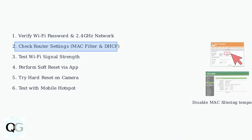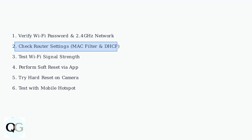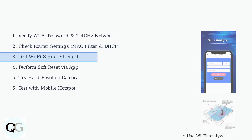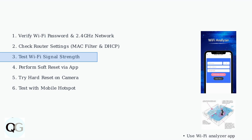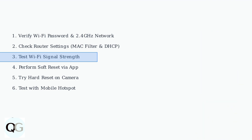Next, check your router settings. Temporarily disable MAC address filtering and ensure DHCP is enabled, as these settings can prevent new devices from connecting to your network. Test the Wi-Fi signal strength at your camera's location using a Wi-Fi analyzer app on your smartphone, as weak signals are a common cause of connection failures.